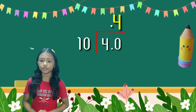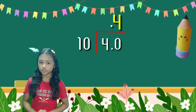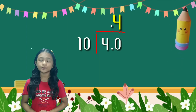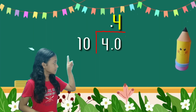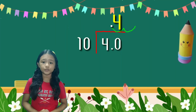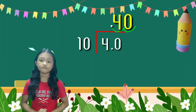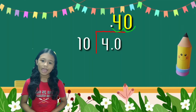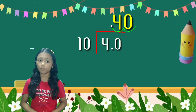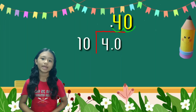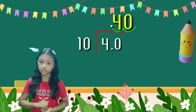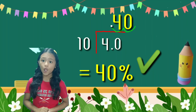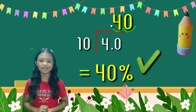But since we are looking for the percent, we need to change the decimal into percent. Let's move the decimal point two times to the right — one, two. Let's put zero to the empty place value. And don't forget to change the decimal point into a percent sign. Our final answer is 40 percent. This means that the percent of change of the pen is 40 percent.